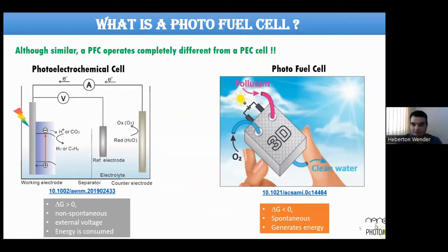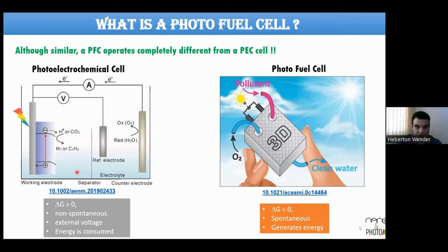A photocatalytic cell has some similarities with photoelectrochemical (PEC) cells, but they are not equal. In a PEC cell, we have a working electrode, counter electrode, and reference electrode — it is not spontaneous and requires energy input for oxidation and reduction to take place. But in a photo fuel cell, we have a galvanic cell: the Gibbs free energy is negative, the device operates spontaneously, generating power without consuming energy, which we can use for an application.